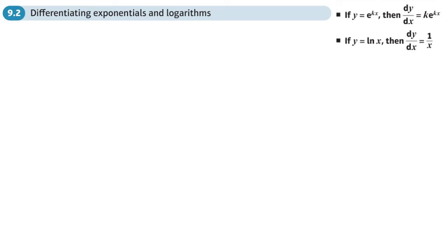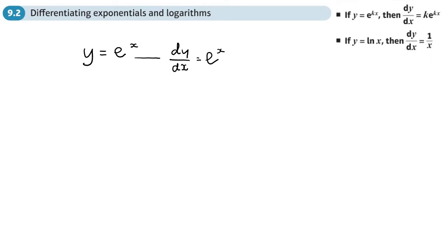This is a second section on differentiation — to differentiate exponentials and logs, they give you a couple of rules. The basic rule is: if y equals e to the x, then dy/dx equals e to the x. This is not given in the formula book, so you'll be expected to remember it.